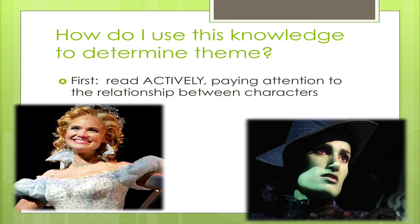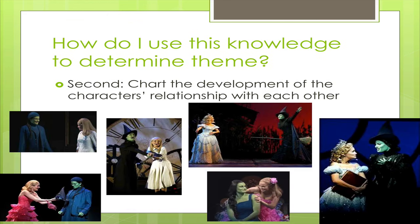So once you understand this idea of a foil pair, how do you use this knowledge to determine theme? This is a three-parter. The first part is to read actively — you have to pay attention to the relationship that is developing between characters. Once you notice a contrast developing between two characters, it's important to chart that development of the characters' relationships with each other. See whether they remain in contrast with one another, or whether they come together, because that's going to make a difference.